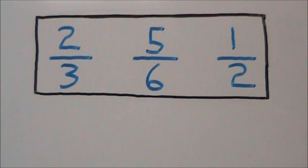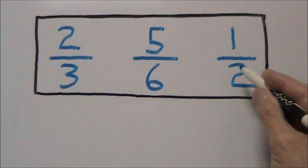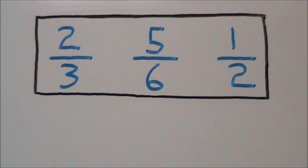The common denominator is going to be a number in which all these three numbers are divisible. This number is going to be six.